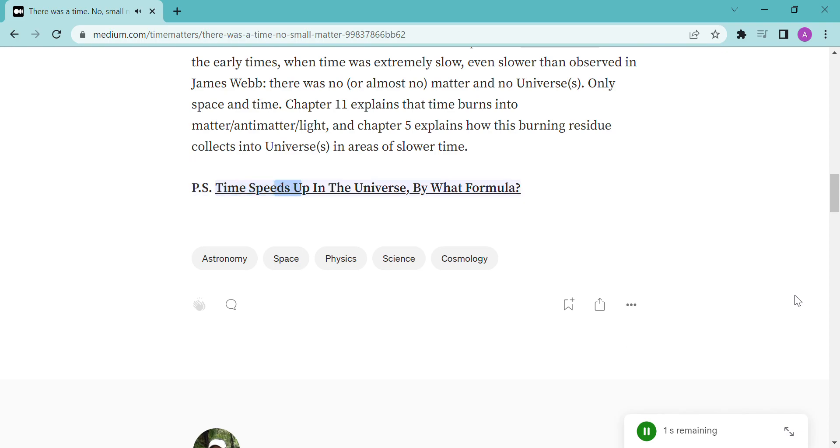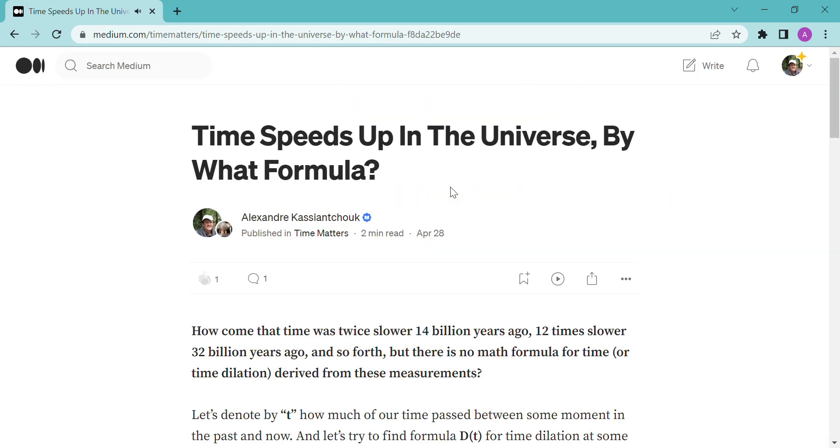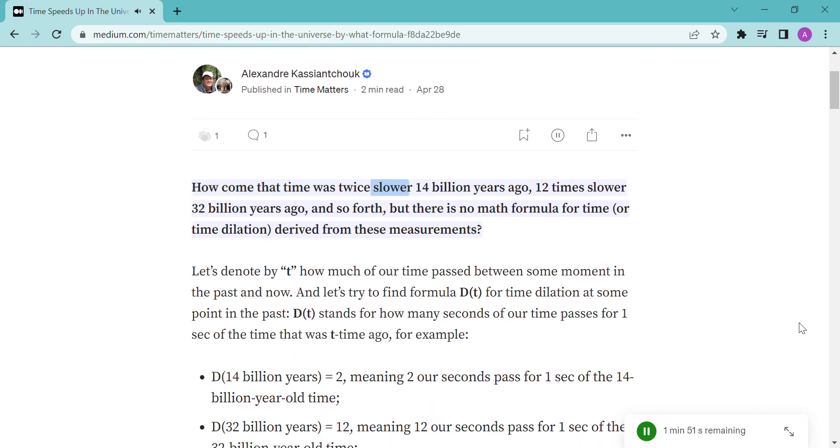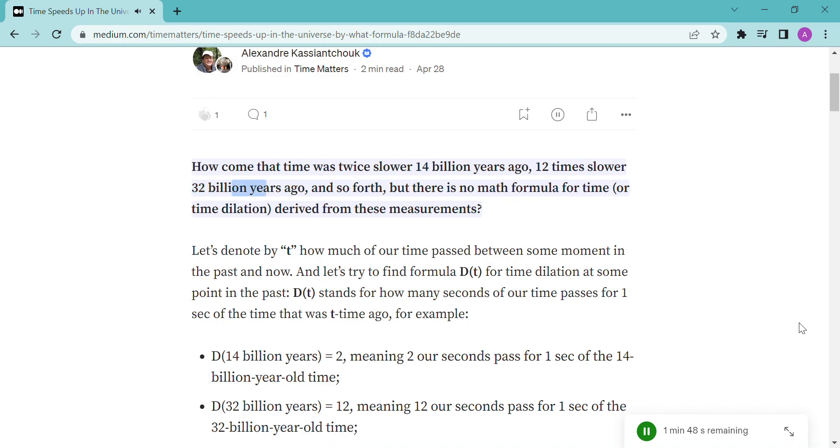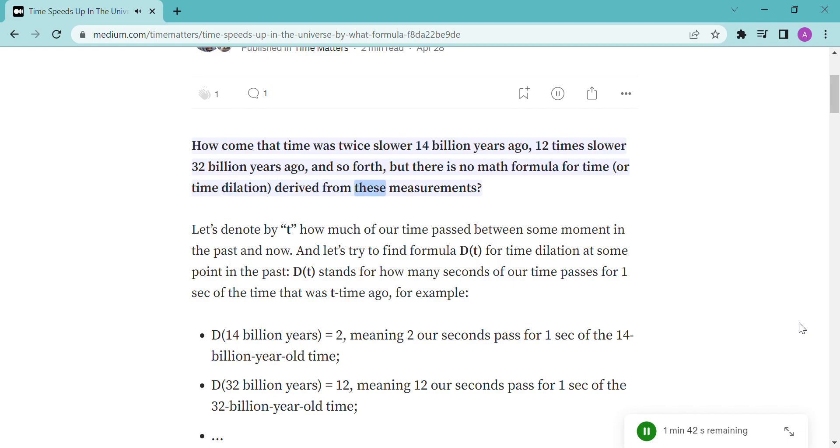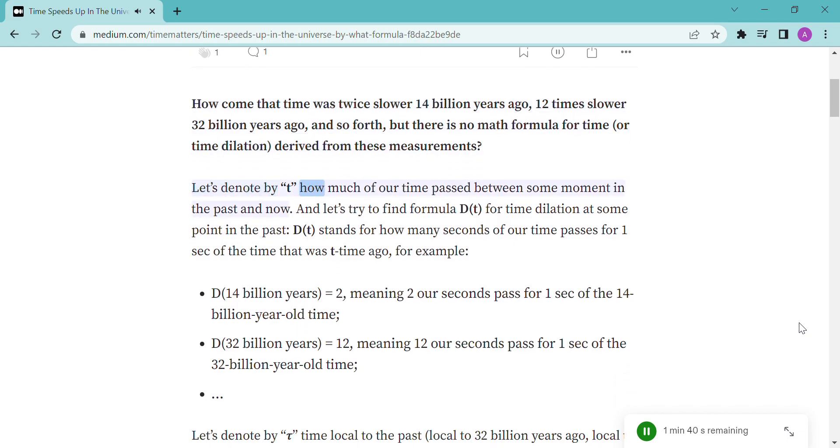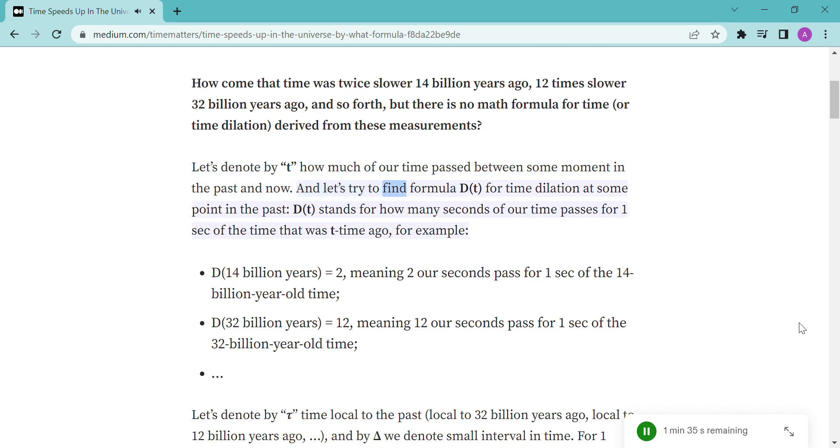P.S. Time speeds up in the universe. By what formula? How come that time was twice slower 14 billion years ago, 12 times slower 32 billion years ago, and so forth? But there is no math formula for time, or time dilation, derived from these measurements. Let's denote by T how much of our time passed between some moment in the past and now. And let's try to find formula DT for time dilation at some point in the past.